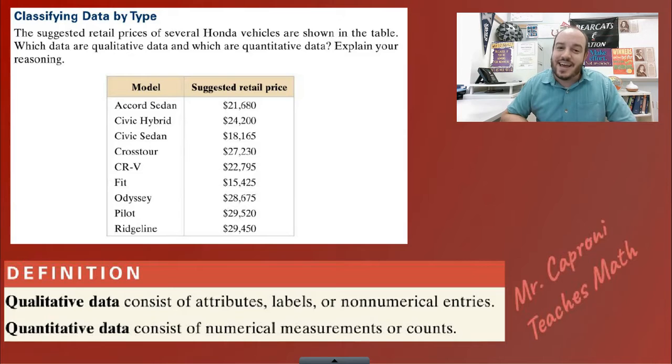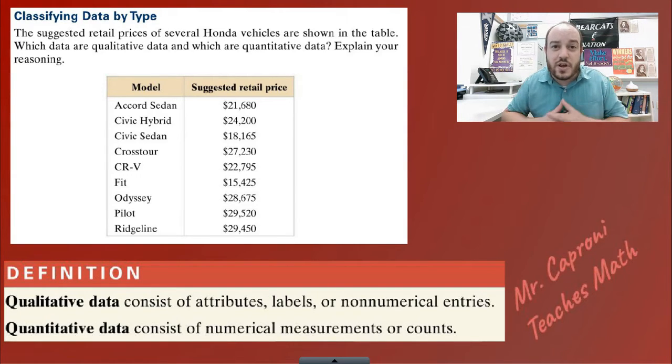If we're looking at the difference between quantitative versus qualitative, which one of these are numbers that measure something? The suggested retail price. That's giving you how much money it is worth, so that's going to fall into our quantitative variable. The qualitative on the other hand would be a label. In this case the model of the car is a type of car, it's a label we are placing on the car.